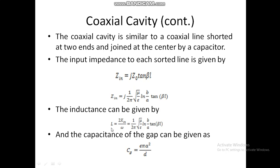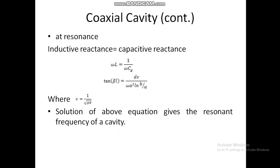By substituting the values, L = (1 / ω) × (1 / 2π) × √(μ/ε) × ln(b/a) × tan(βl). The capacitance of the gap is given by C = εA/d, where A is the area = πa², and d is the gap distance. This is how we calculate the capacitance of the gap.